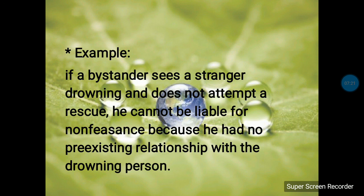For example, if a bystander sees a stranger drowning and does not attempt to rescue him — not helping him or calling other swimmers to perform a rescue — he cannot be held liable. In non-feasance there is no liability, unlike the two previous kinds. He cannot be liable because he had no pre-existing relationship with the drowning person, and the dangerous situation was not created by him.